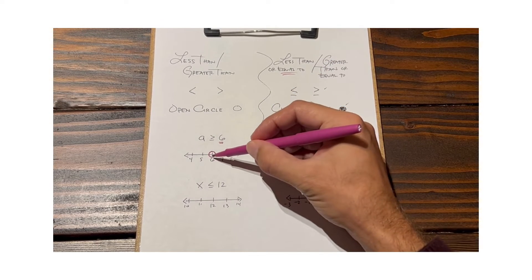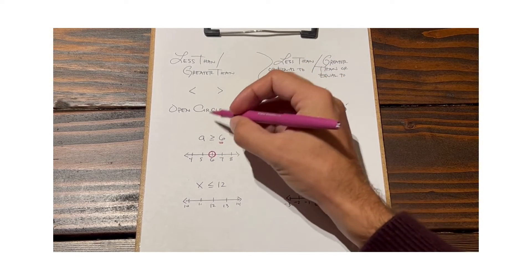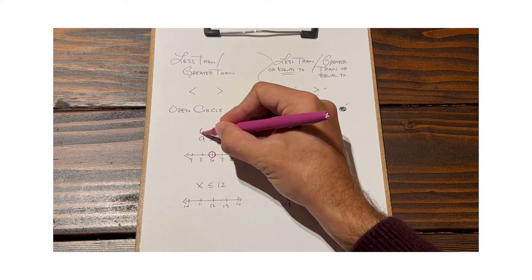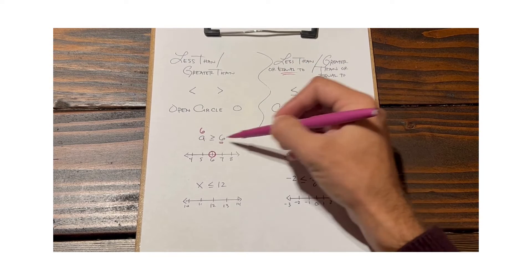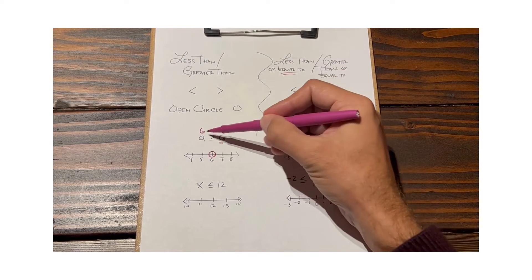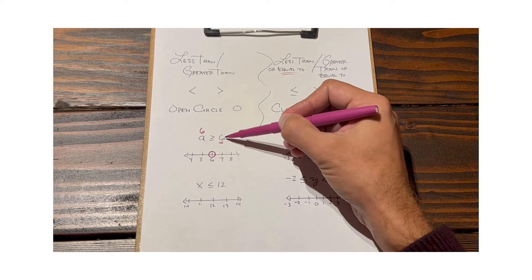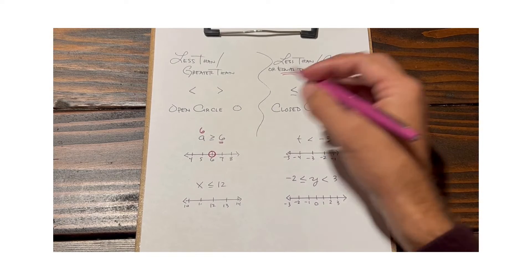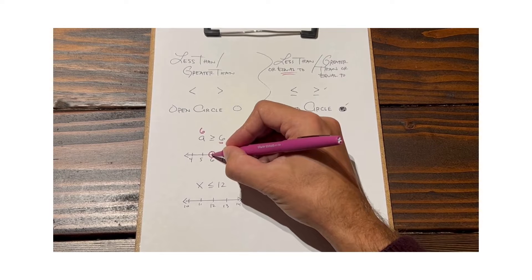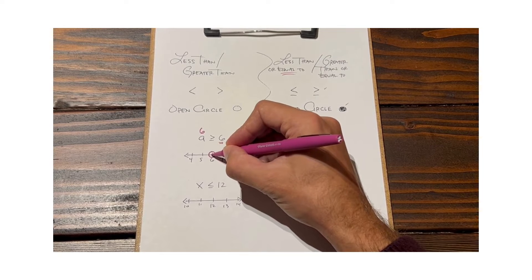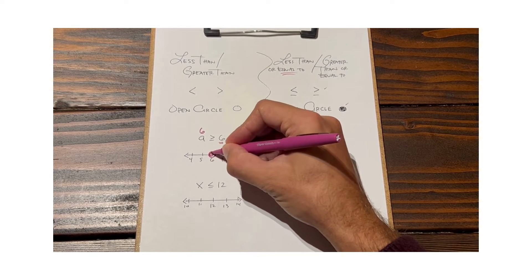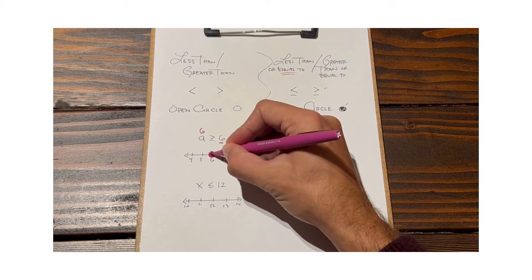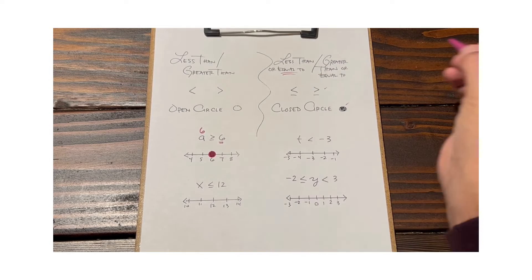Let's take a look at what happens when we plug in the critical value for a. We want to know: is this true or not? Is six greater than or equal to six? And of course it is — it's equal to. So therefore we can say this is a solution to our inequality, and we plot a point every time we have a solution.